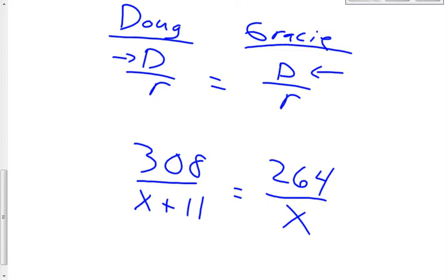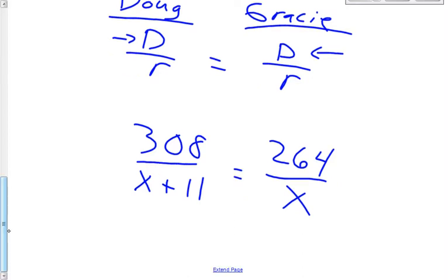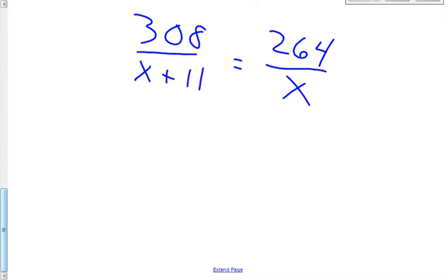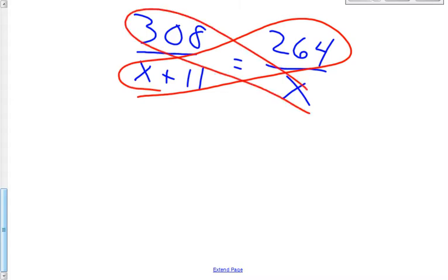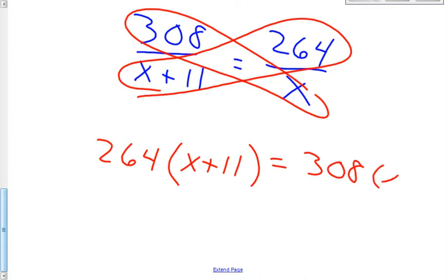Now we have to solve our equation. This is a proportion where the most common technique for solving a proportion is to cross multiply. This product equals this product: 264 times x plus 11, that equals 308 multiplied by x.